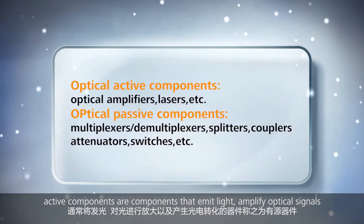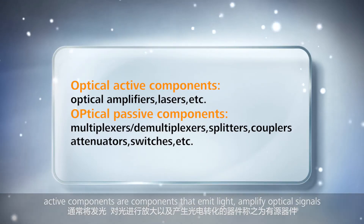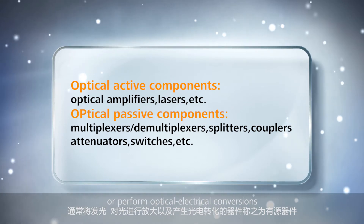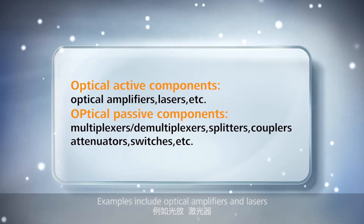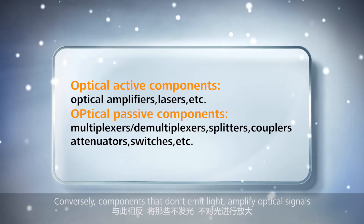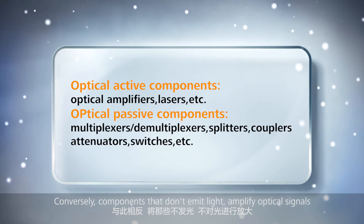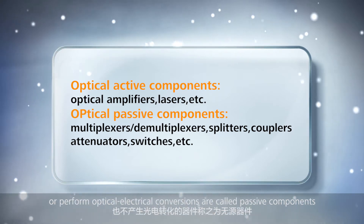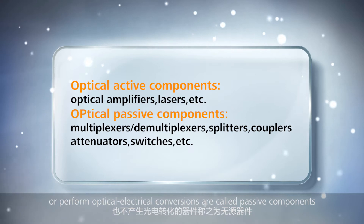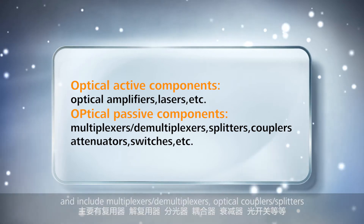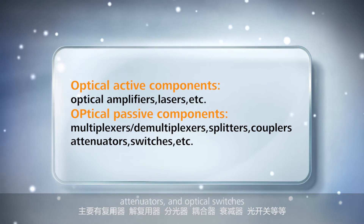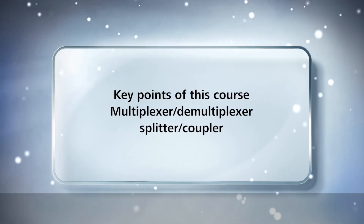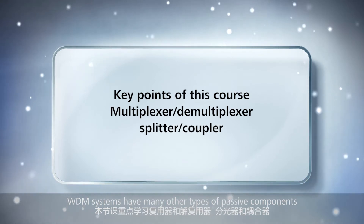In WDM systems, active components are components that emit light, amplify optical signals, or perform optical-electrical conversions. Examples include optical amplifiers and lasers. Conversely, components that don't emit light, amplify optical signals, or perform optical-electrical conversions are called passive components, and include multiplexers, demultiplexers, optical couplers, splitters, attenuators, and optical switches.